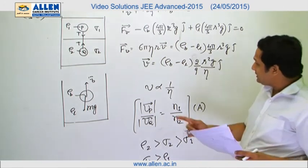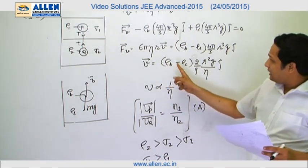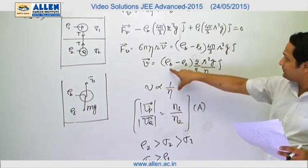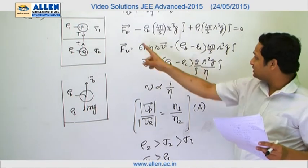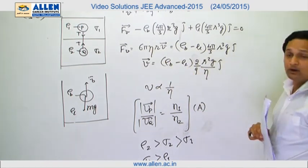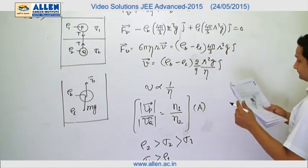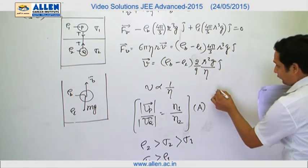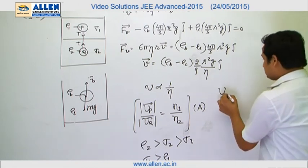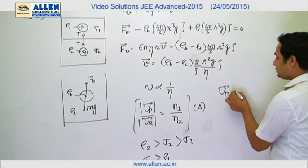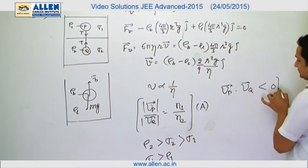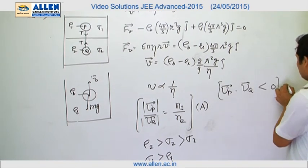Hence we can say that from this formula, for P, density is rho 1 and liquid density is sigma 2. From this we can say that Vp and Vq will be in opposite direction. That means Vp dot Vq will be less than 0. Hence answer is D.